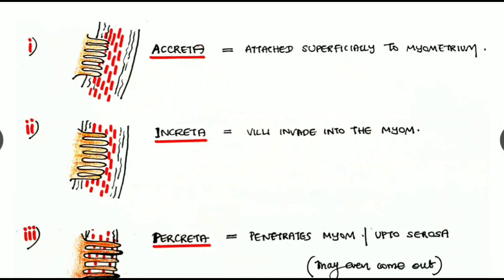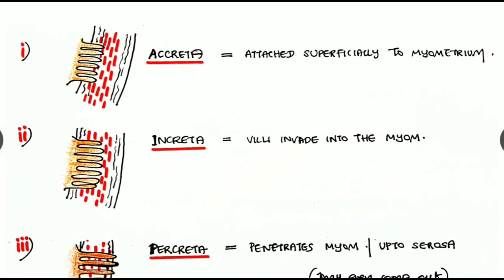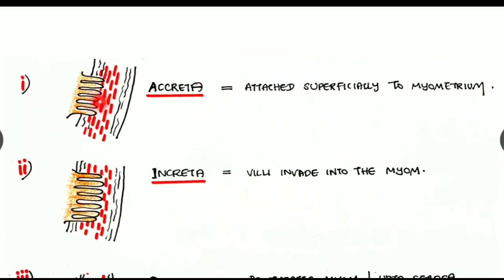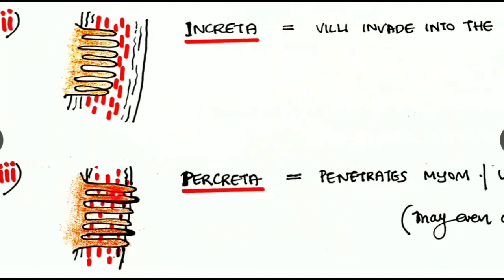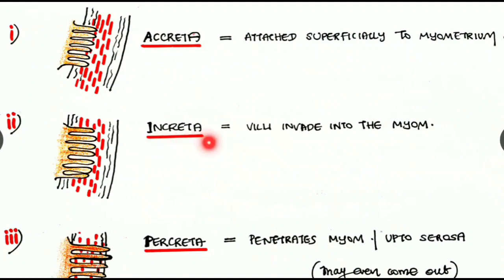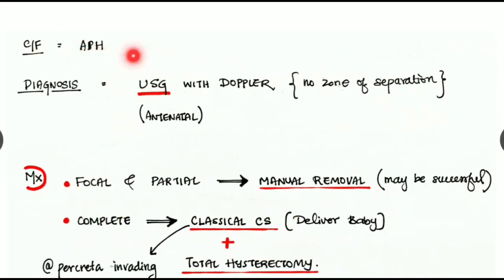Based on the level of invasion, morbidly adherent placenta is divided into three types. First, placenta accreta: villi are attached superficially to the myometrium. Second, placenta increta: villi invade much more into the myometrium, almost invading the myometrium layer as seen in the figure. Third, placenta percreta: villi penetrate through the myometrium up to the serosa and sometimes even beyond the serosa, as seen in the figure where villi have entered outside it.